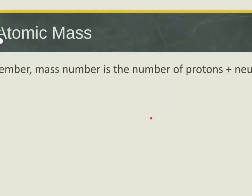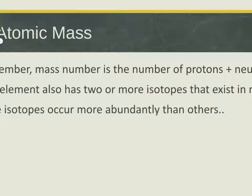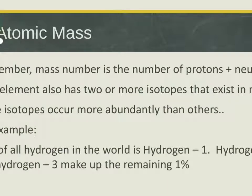Mass number is the number of protons plus neutrons. Each element also has two or more isotopes that exist in nature — some isotopes occur more abundantly than others. Pretty much every element has more than one version of itself; some have up to eight or nine, most have two or three. For example, 99% of all hydrogen in the world is hydrogen-1, which has one proton and zero neutrons.